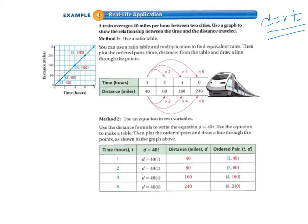Example four is our real life application. A train averages 40 miles per hour between two cities. Use a graph to show the relationship between the time and the distance traveled.